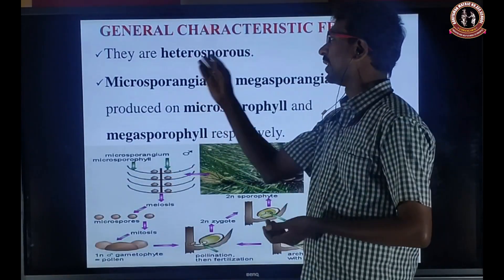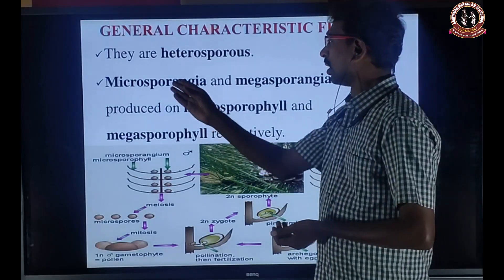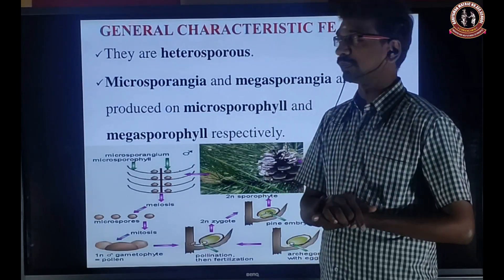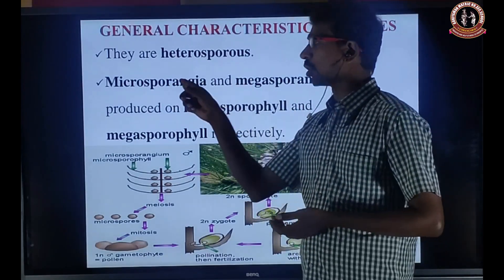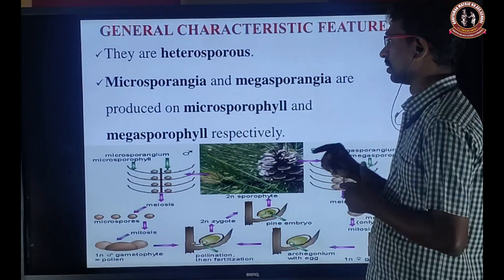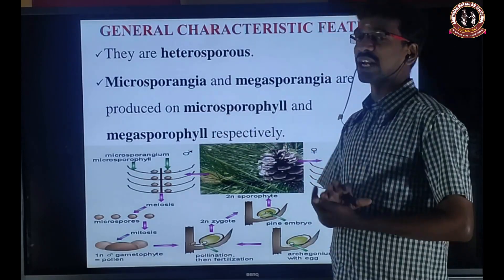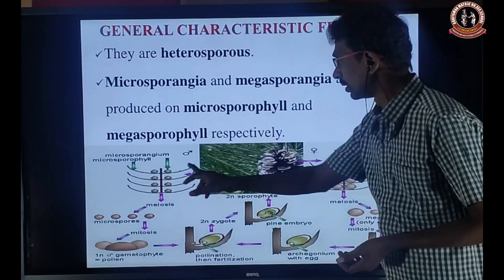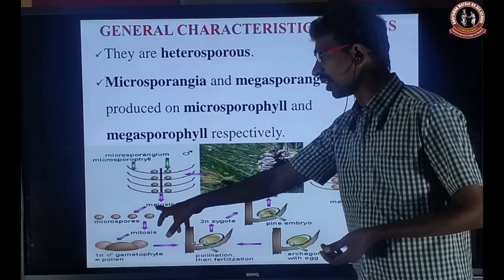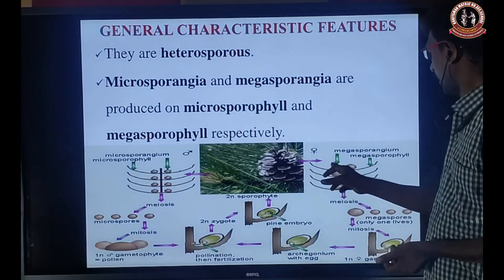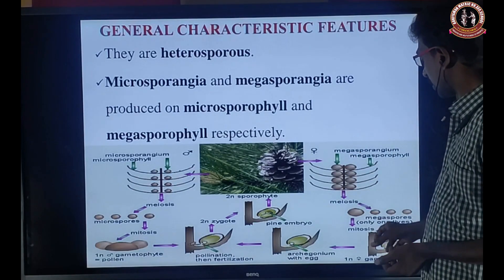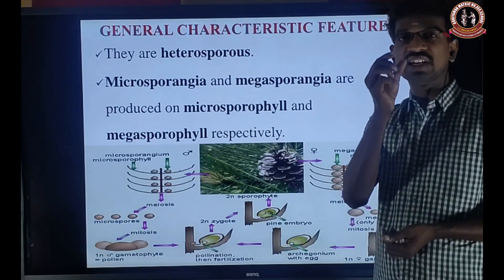The spores are heterosporous. Heterosporous means it has two types of spores: microspore and megaspore. The microsporangia — that means the microspore-producing structure — and megasporangia — the megaspore-producing structure — are produced on microsporophyll and megasporophyll respectively. So the microsporophyll has microsporangia; after meiosis it produces microspores. The megasporophyll has megasporangia; after reduction division it produces a haploid megaspore — that is the egg or ovum.